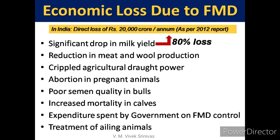The losses due to FMD include: a significant drop in milk yield accounting for 80% loss, reduction in meat and wool production, crippled agricultural draft power, abortion in pregnant animals, poor semen quality in bulls, increased mortality in calves, government expenditures on FMD control — including a 6-month free vaccination program in all Indian states — and treatment of infected animals.